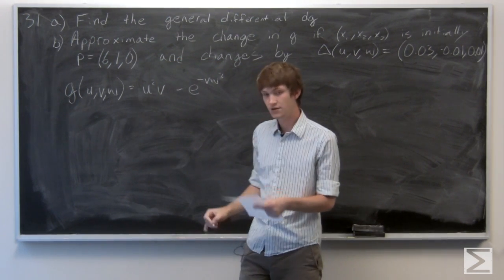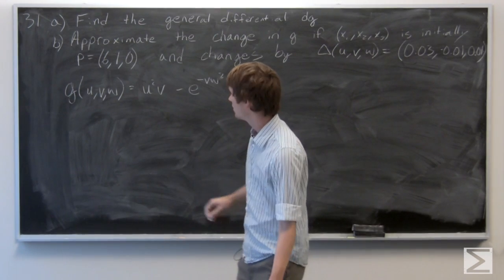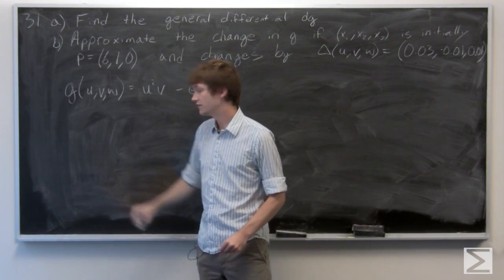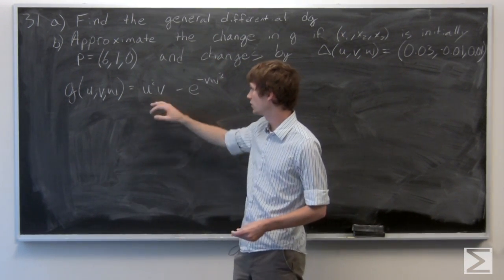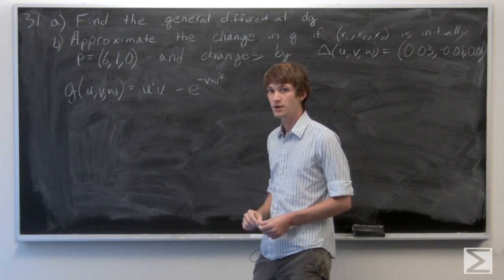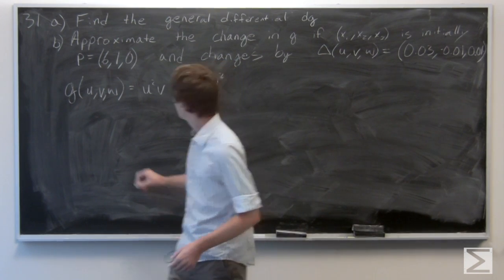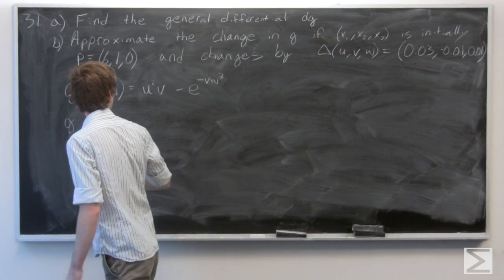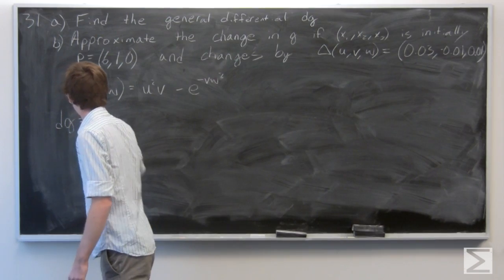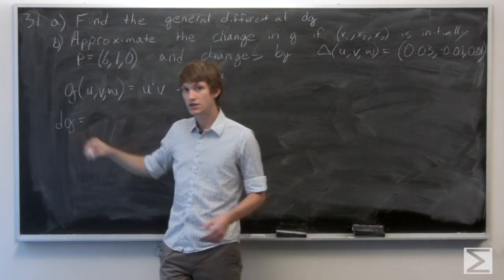And we're given that our function g of u v w is equal to u squared v minus e to the power of negative v w squared. So the general differential dg...